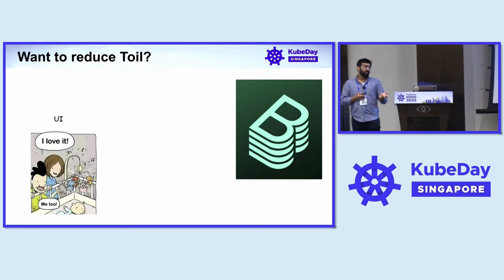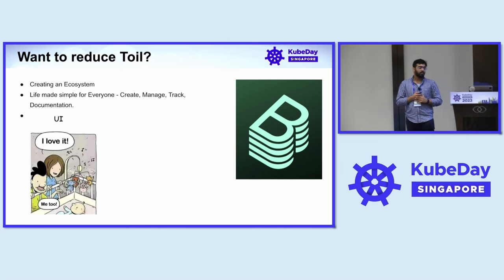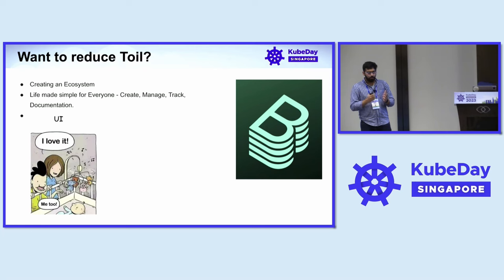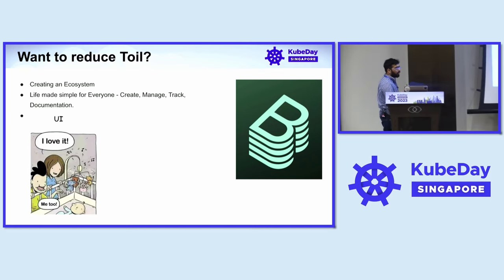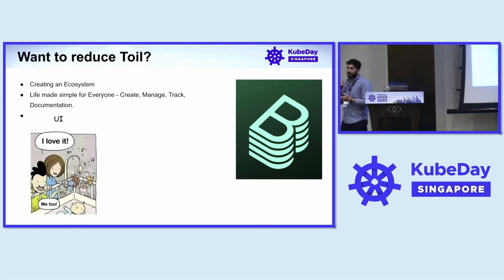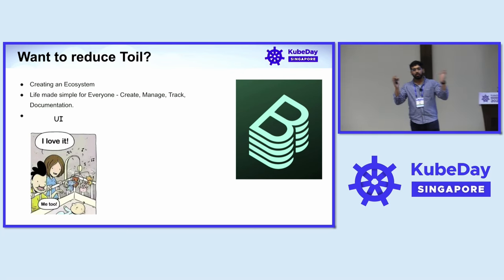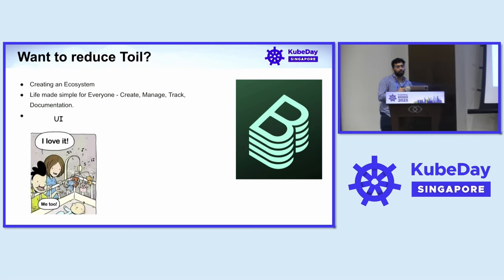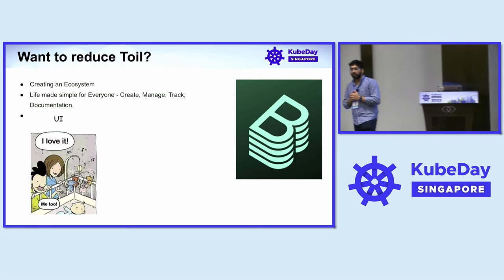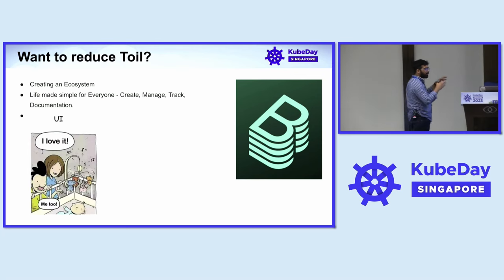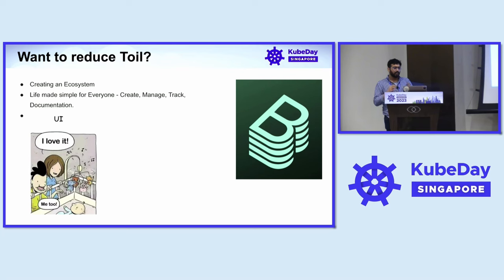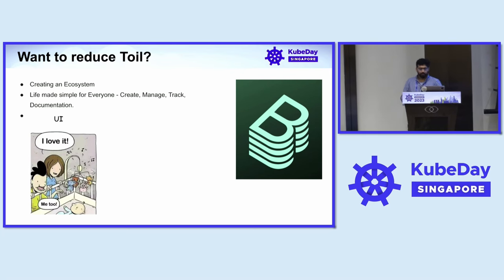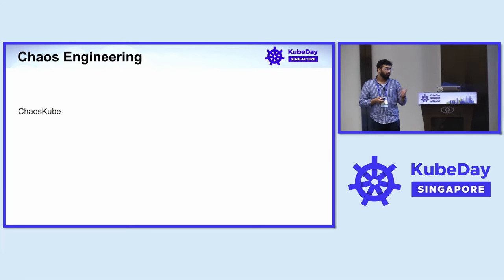The next thing we are currently building is using Backstage. Backstage is a platform to build platforms. For example, when we onboard an intern, they need all the documents, previous architecture diagrams, recordings, access to tools, observability, applications, and total resources. Building something with Backstage creates an ecosystem — it reduces toil, the repetitive work, so that newcomers and outgoing people can easily understand your architecture, manage, track, and see the documentation.